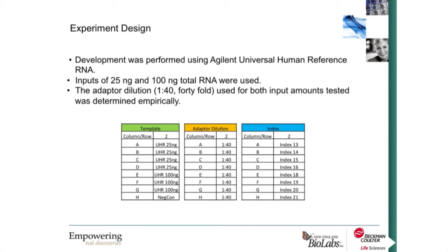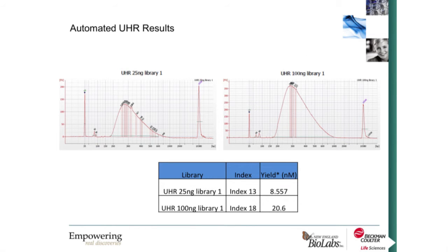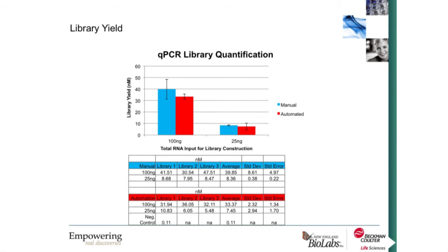We ordered Agilent Universal Human Reference RNA and tested it with 25 nanogram and 100 nanogram total RNA inputs, diluting the NEB adapter 1-to-40 after several titrations. This is Bioanalyzer data of our Universal Human Reference RNA libraries at 25 nanogram and 100 nanogram total inputs. Our yields were quite good, the size distribution was typical for an RNA-seq library, and we did not observe adapter dimers at 120 bases. We then shipped the libraries to New England BioLabs for qPCR quantification.